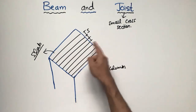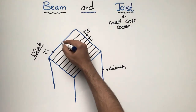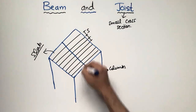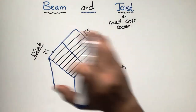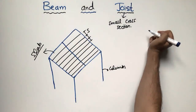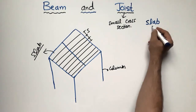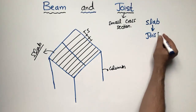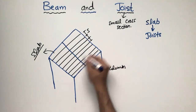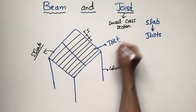You place many small beams — joists — throughout the length of the slab, and then you place the beam along the perpendicular position. The load transfer works like this: the load is first taken by the slab and then transferred to the joists. There are many joists — these members are called joists.